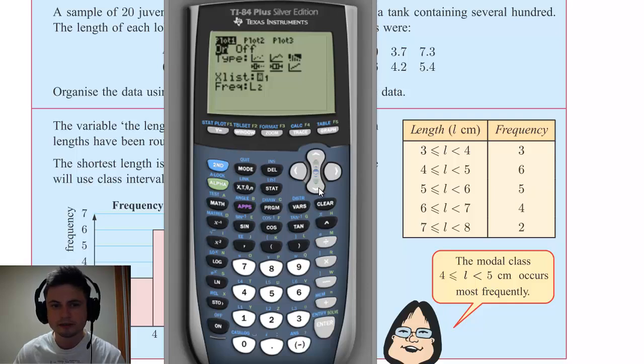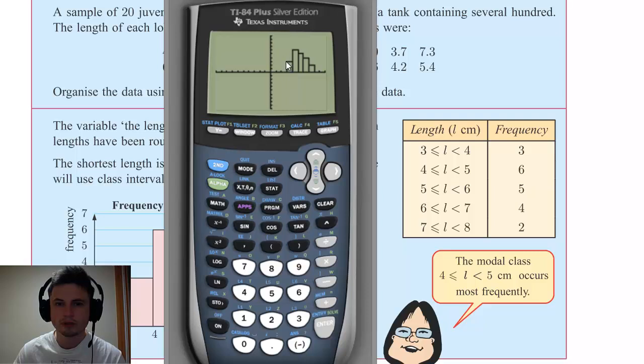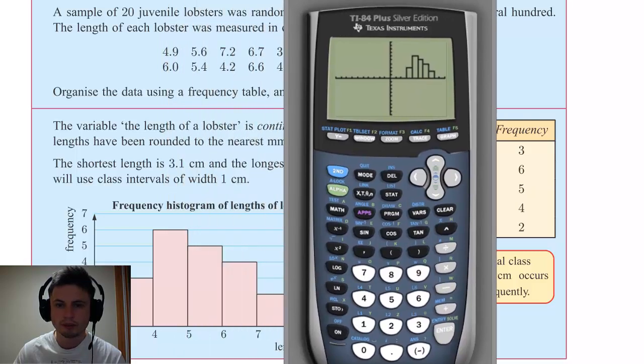And on the bottom here it will ask you what is your frequency list, what is your X list. Your X list should be L1, your frequency list should be L2. If it's not, you just click on second two for L2 and second one for L1. Then that's all you have to do, you just have to click on GRAPH.